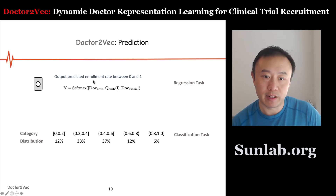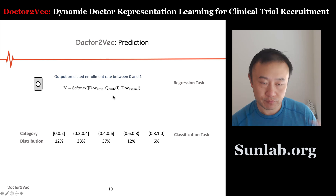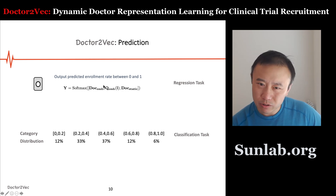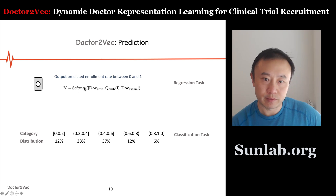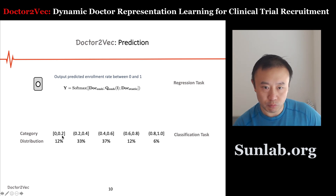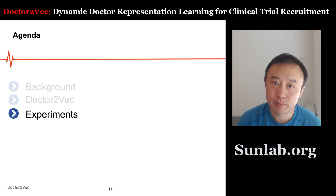The final prediction is a regression task — we predict the enrollment rate of this doctor for this trial, a score between zero and one. The output combines the dynamic memory network output, the static doctor representation, and the query (trial) information concatenated together, going through a sigmoid layer to give a prediction between zero and one. We can also put those prediction scores into different buckets (0–0.2, 0.2–0.4, and so on) to evaluate this as a classification task. That's the model.